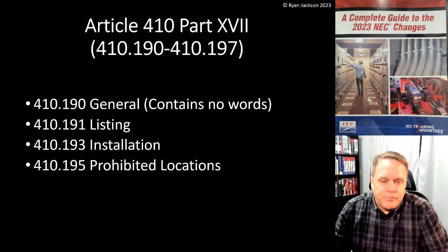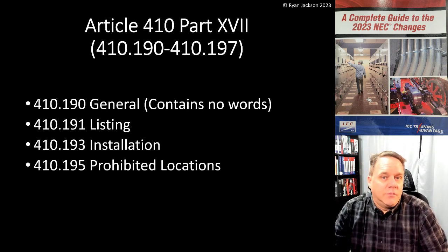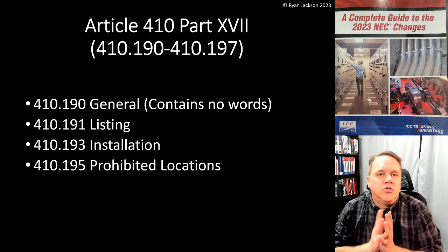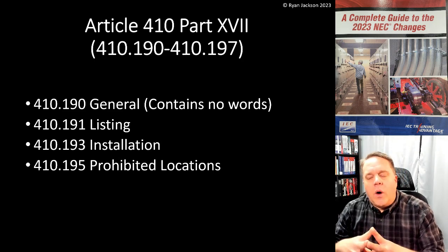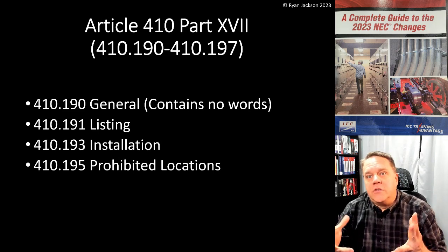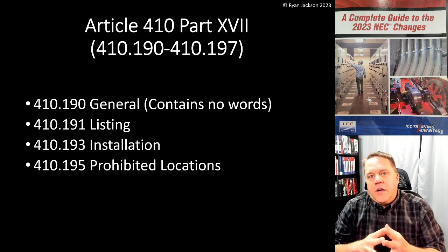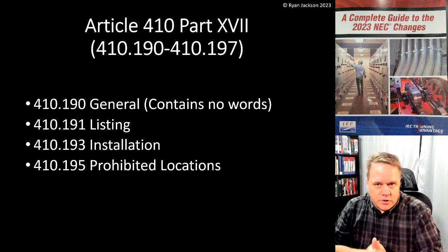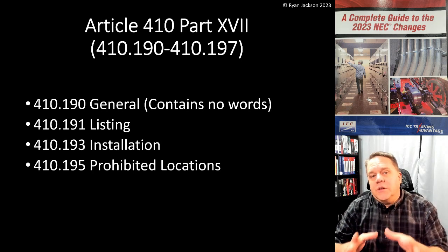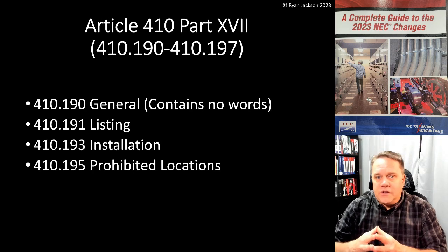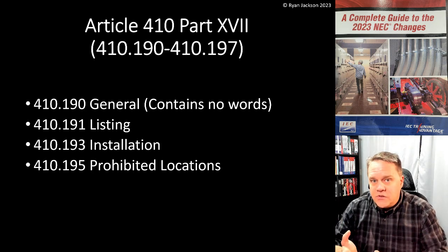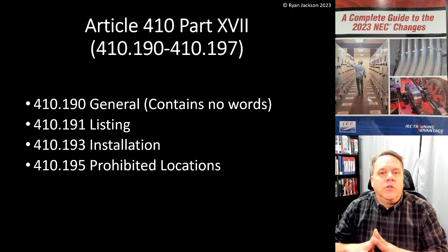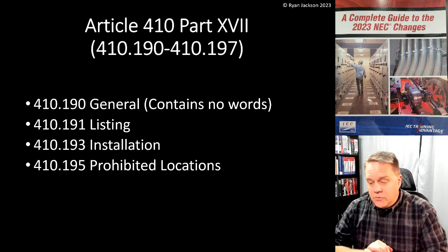Section 410.195 actually has some important language, though again it mostly says to follow instructions. Germicidal irradiation luminaires are UV lighting luminaires designed to kill germs — and with COVID we're going to see more of these installed, both residential and commercial. If the luminaire says don't use it in occupiable space, or that it's intended only for use when the building is unoccupied, we need to follow those instructions.